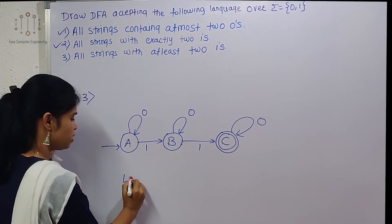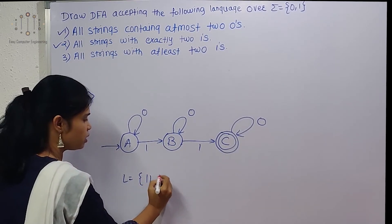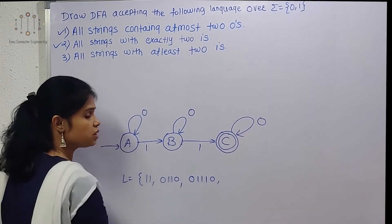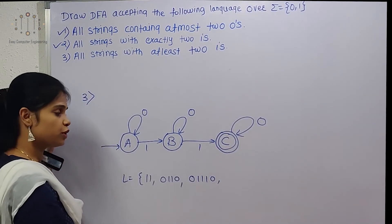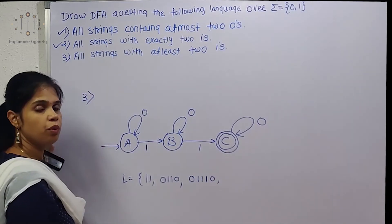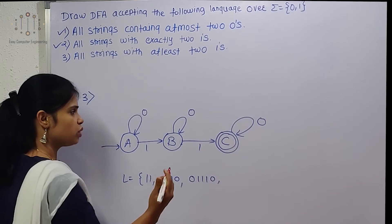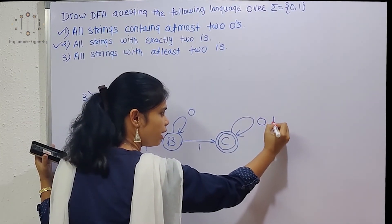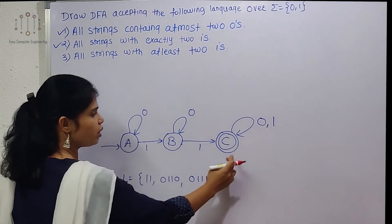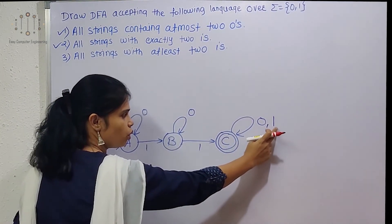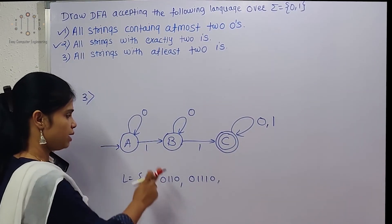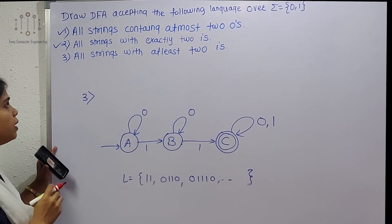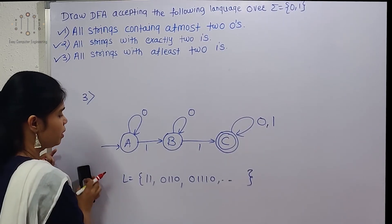Strings like '011', '01110' are possible — at least two 1s means there can be more than two 1s. So after accepting at least two 1s in state C, we can take any additional 1s. We show a self-loop on both 0 and 1 at state C. This completes the DFA for at least two 1s — our third example.